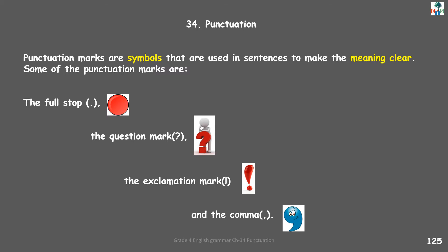What are punctuations? Punctuation marks are symbols that are used in sentences to make the meaning clear. Some of the punctuation marks are full stop, question mark, exclamation mark and the comma. Now children, why do we use these punctuation marks or symbols at the end or in the middle of the sentence? Yes, to make the meaning clear of that sentence. Let's learn this with a few examples.